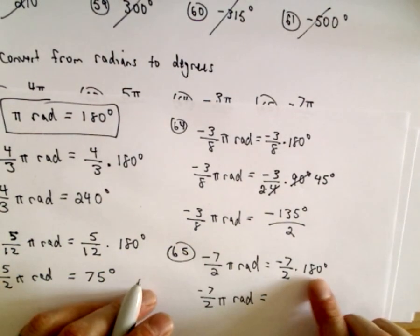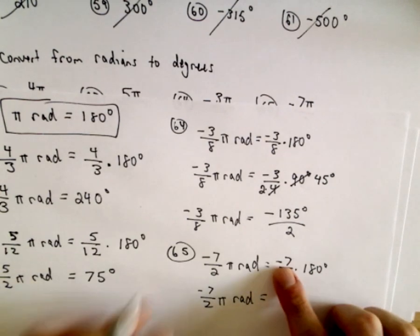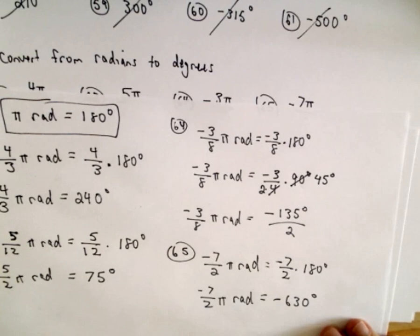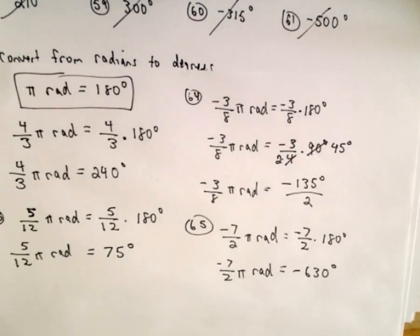So if we divide 180 by 2 that's 90. 90 times negative 7 is going to give us negative 630 degrees. So again, it's just a matter of multiplying by the correct value and then reducing your fraction.